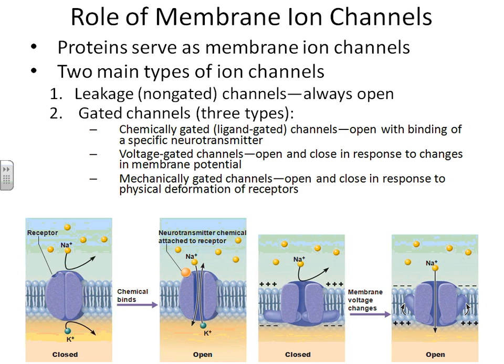One thing we did not cover in a lot of detail in Chapter 9 that we need to focus on now is the different stimuli that can be used to change the structure of an ion channel found in a membrane, causing it to open or close.